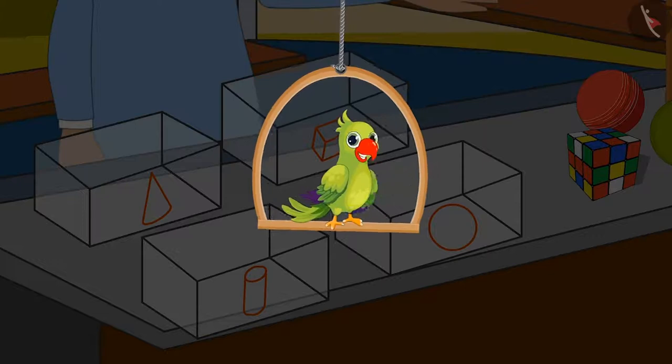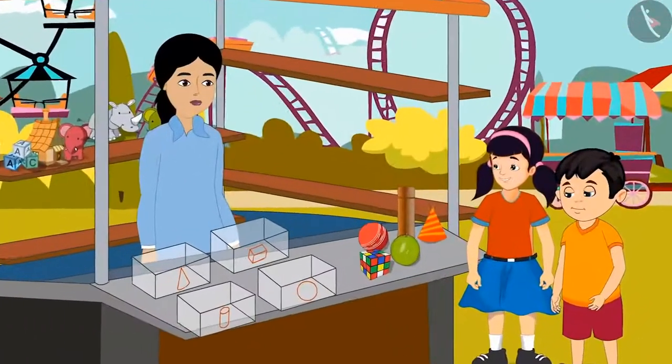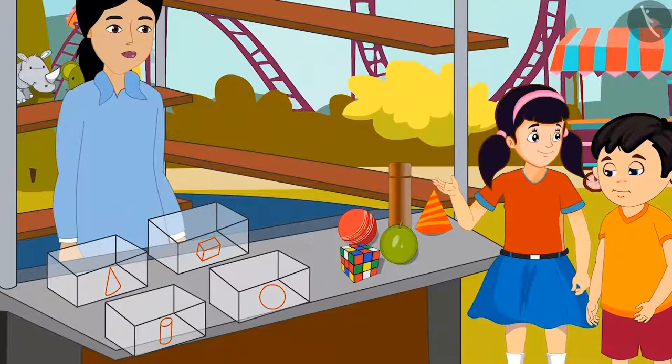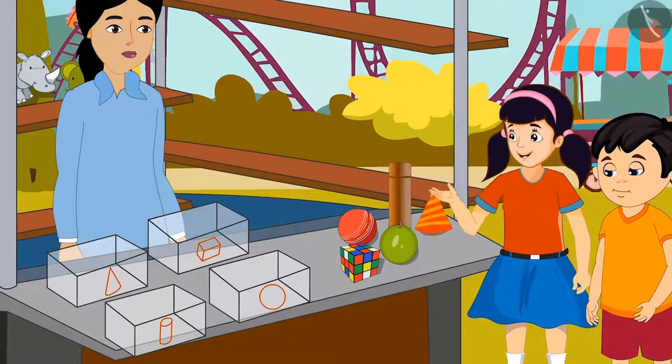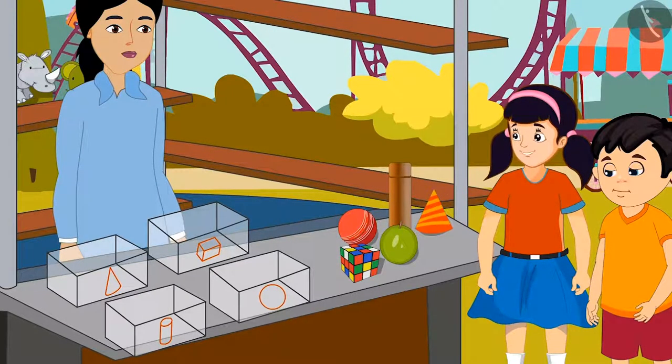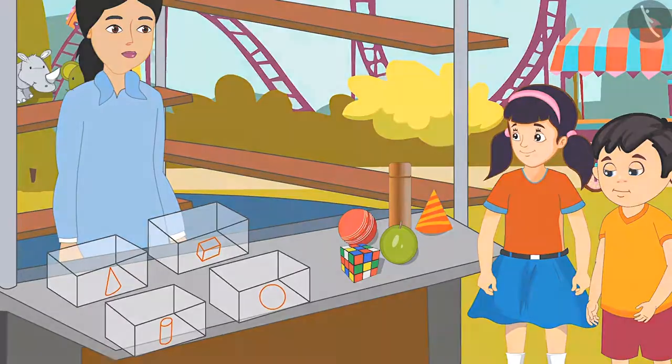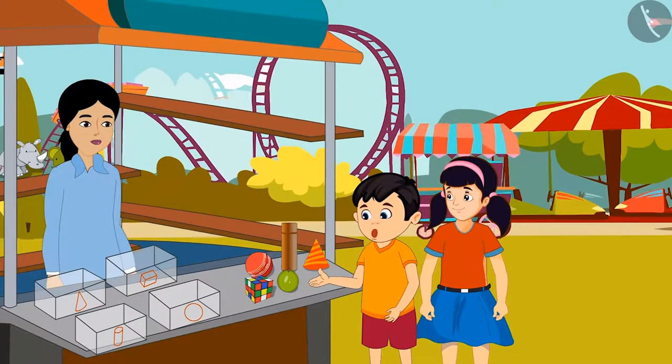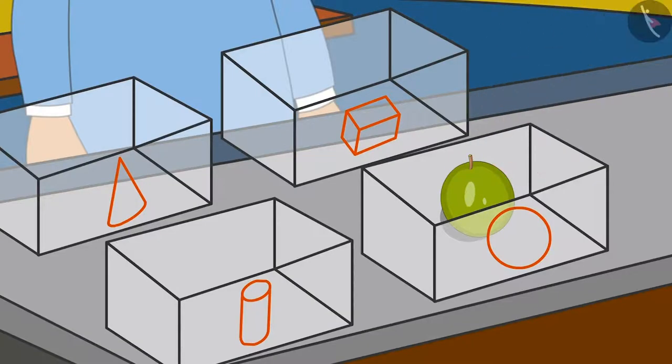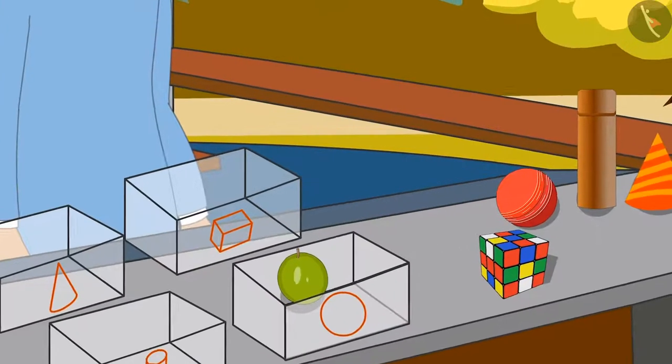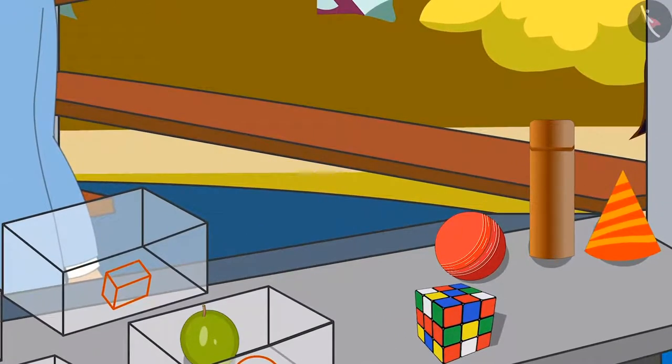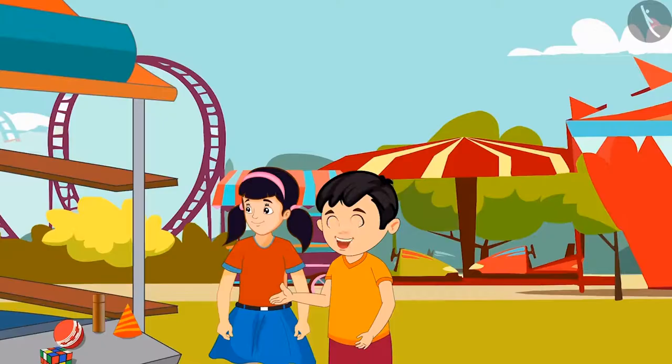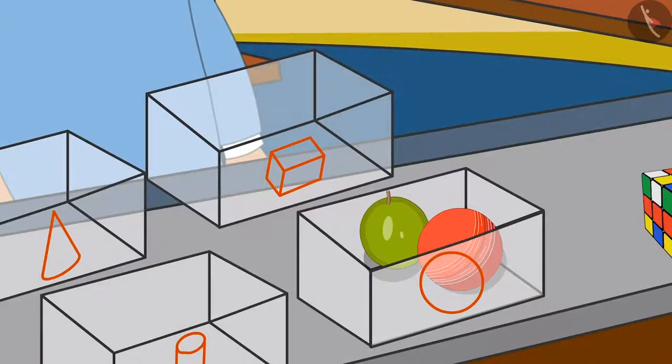Chotu and Neha started playing. Chotu, first of all, let's find objects that look like the shape of a round ball. Yes Neha, I found an object which looks like a round ball. I will put it in this box. Here is another round ball-like thing. Yes Neha, put it in this box too. Neha puts a round ball-like object in the box.